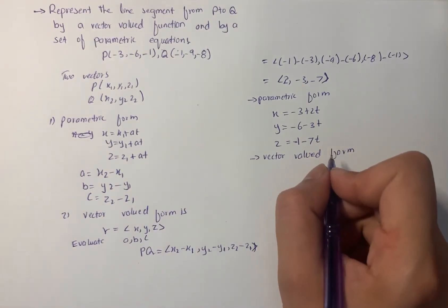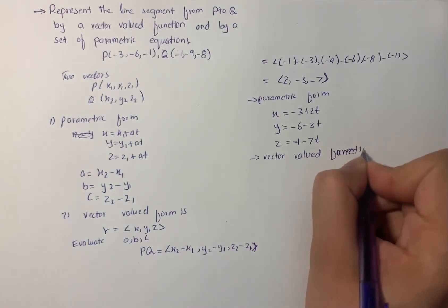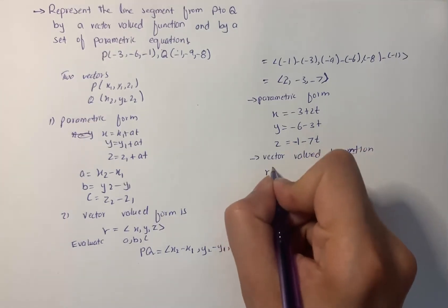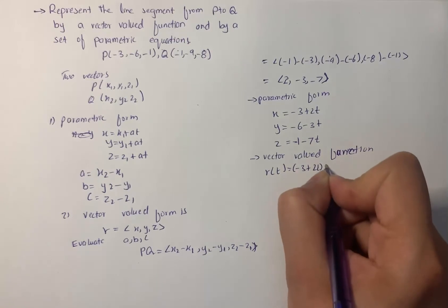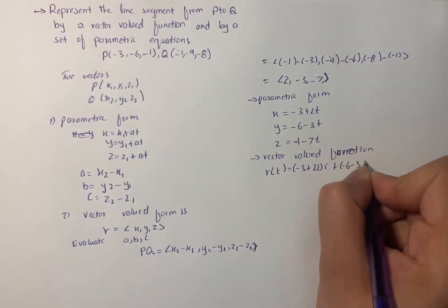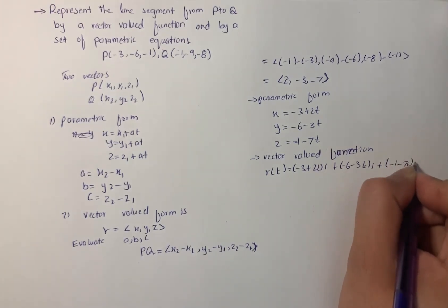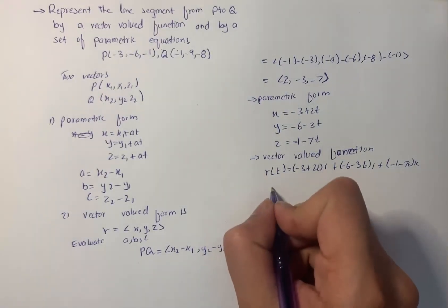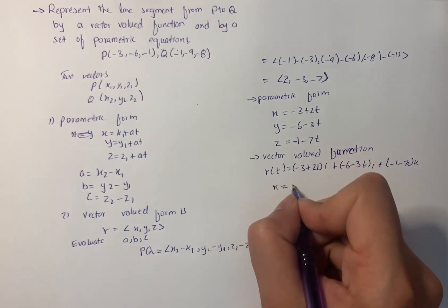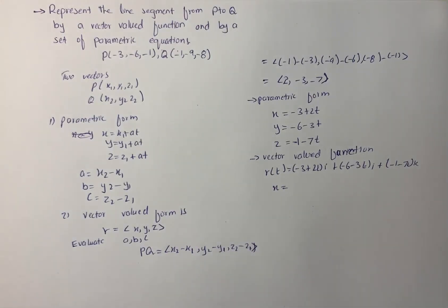The vector-valued function is: r(t) = (-3 + 2t)i + (-6 - 3t)j + (-1 - 7t)k. So the parametric form is x = -3 + 2t, and that is the solution for the given problem.